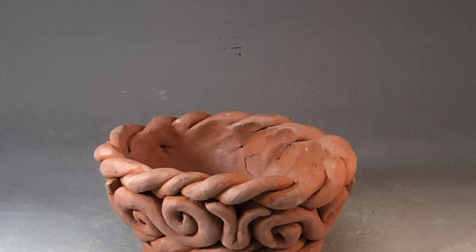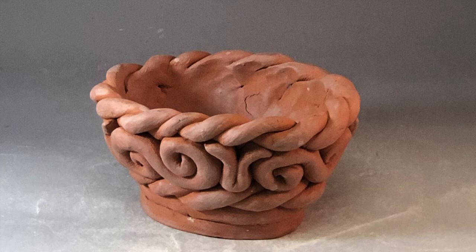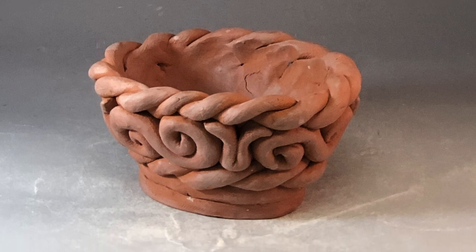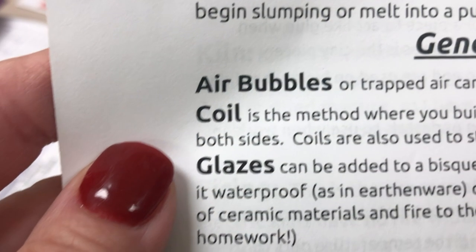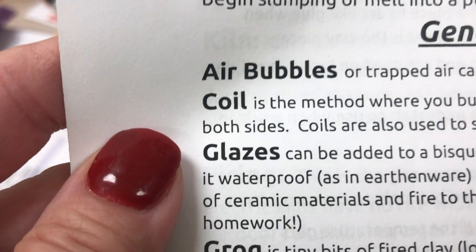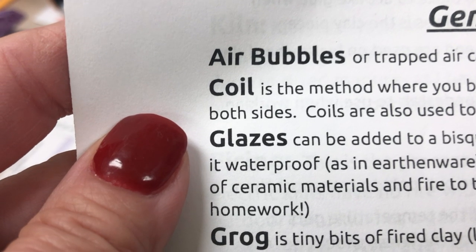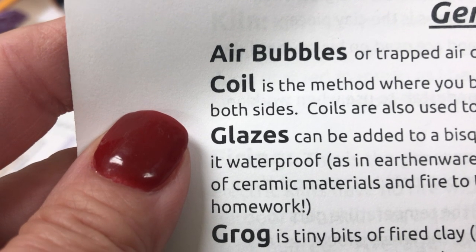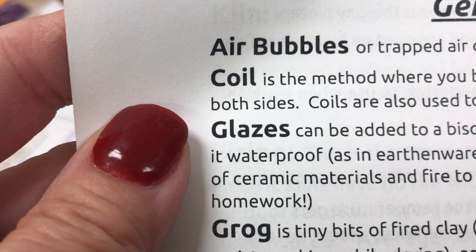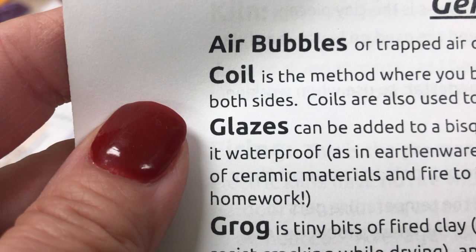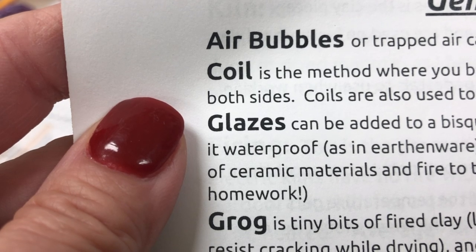Coils are one of the methods of hand building — rolling out coils — and can be used in conjunction with any other method. Glazes are typically added after bisque firing, but we can use underglazes before firing. Grog are bits of fired clay found within some clay bodies to add porosity and strength.